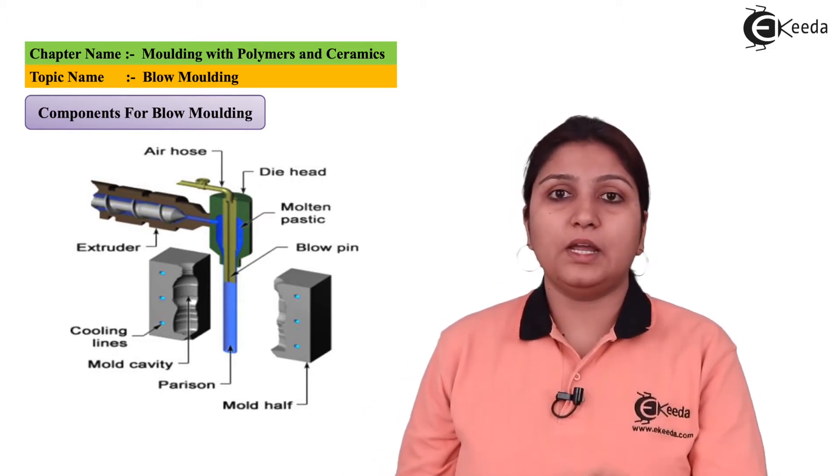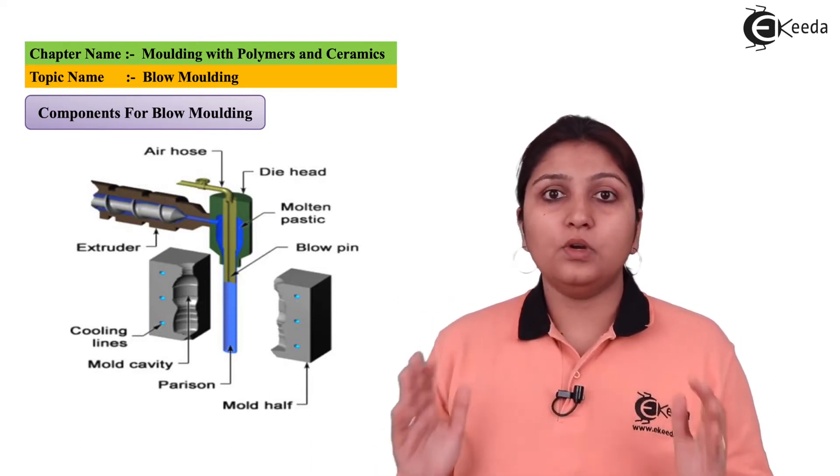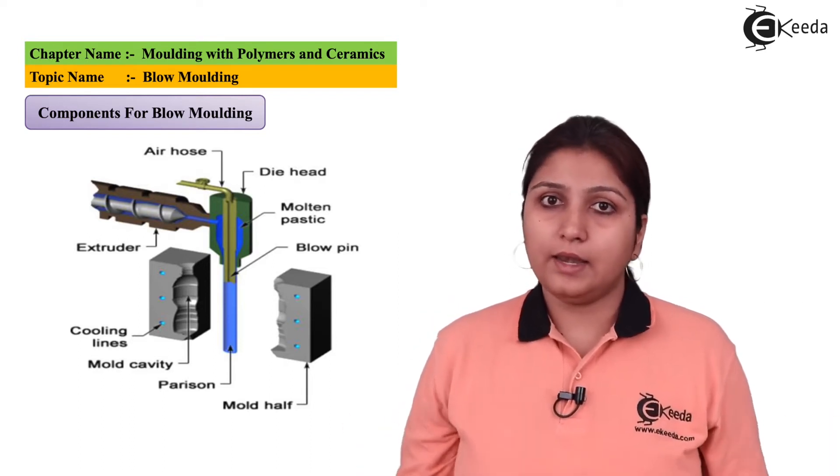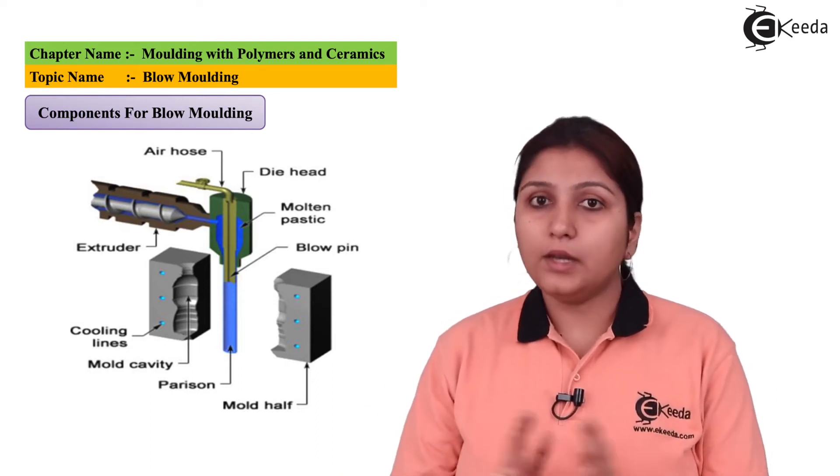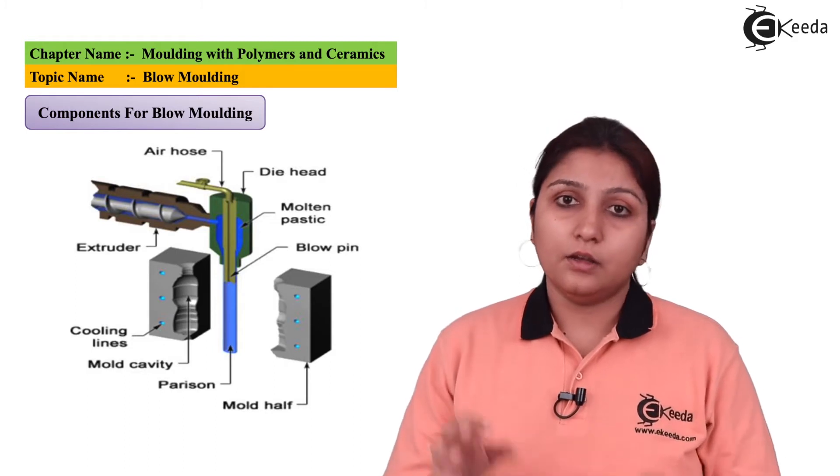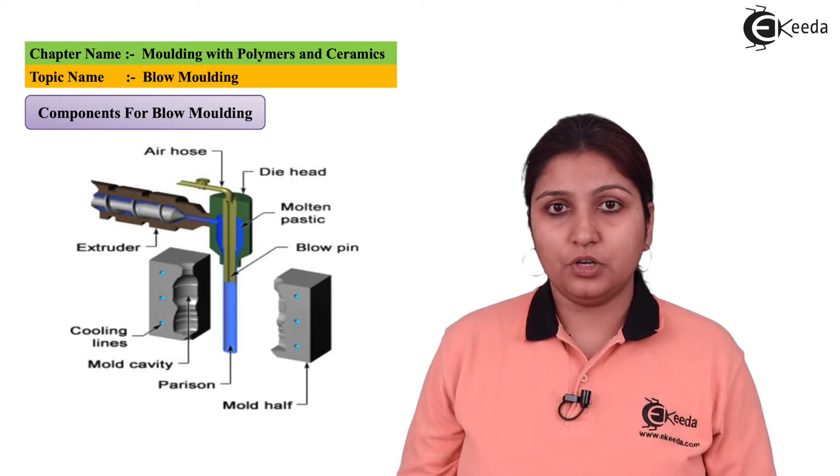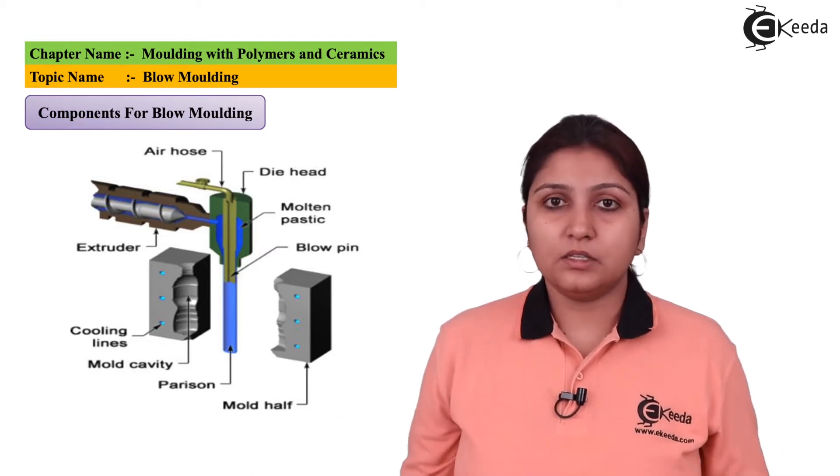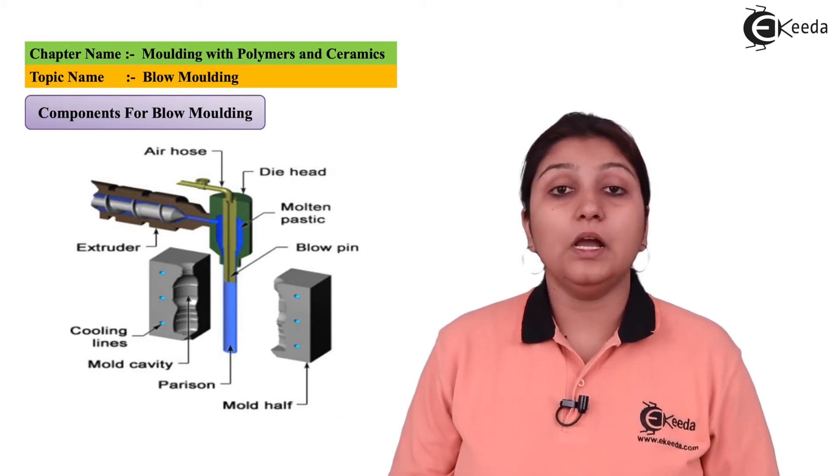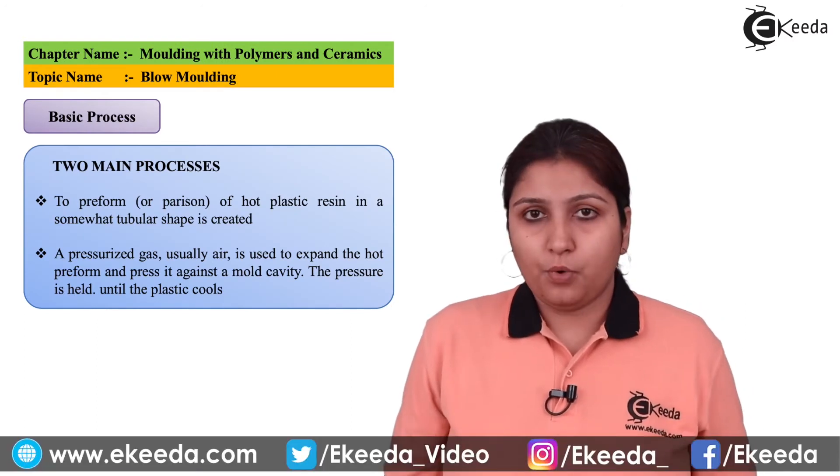You can see there are two dies on right and left of a parison. When your parison is blown which is a bit heated, it reaches your die cavity, gets its shape and it is held at that position. And then when the die part is removed, your exact shape can be achieved. In blow molding, these two steps are very important.